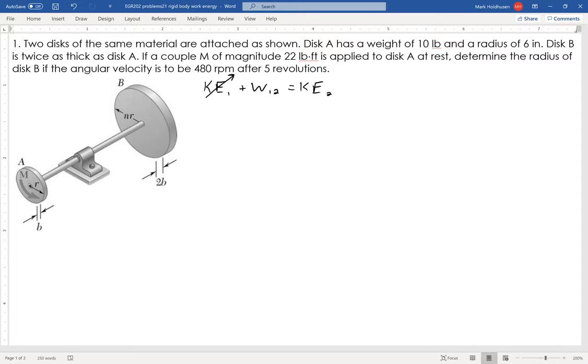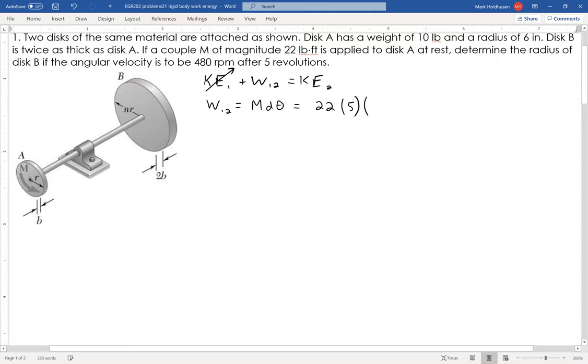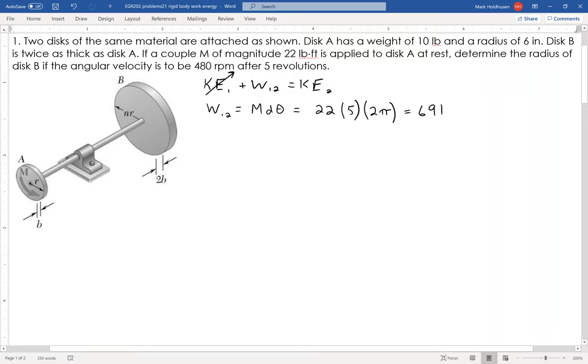Work from 1 to 2, really the only thing working on this guy is the moment. The equation for the work due to a moment is that moment times the change in position. The moment is constant, so this is just 22 pound feet times the 5 revolutions. I want this all in radians, so it's 5 times 2 pi, which gives me the work being done of 691. That's the only work being done on this system.